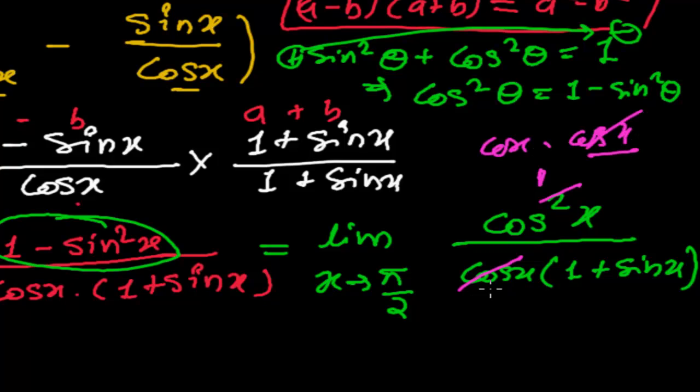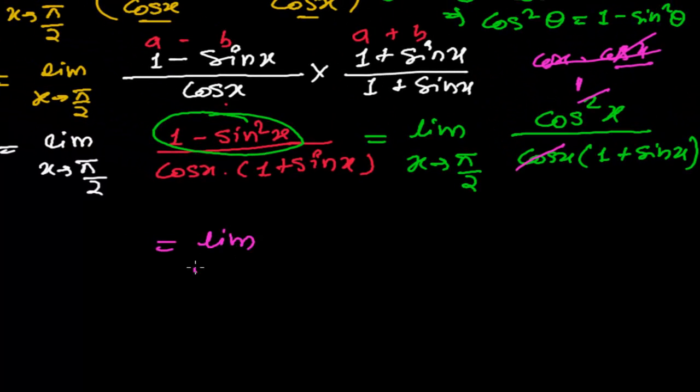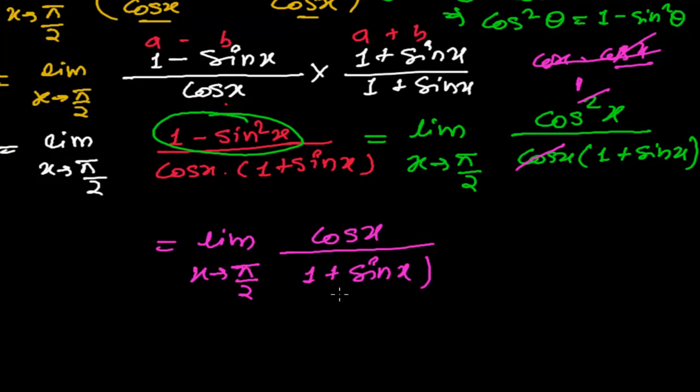Now it will be only 1 here because it is cos x times cos x. So 1 cos x will cut down. So only we will get cos x, single cos x. So now we can easily do this.